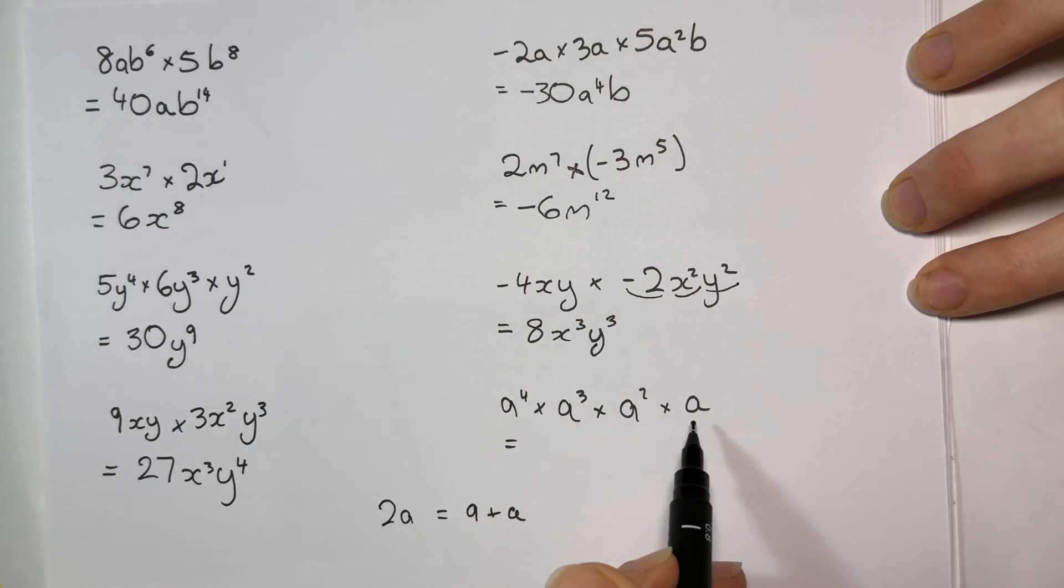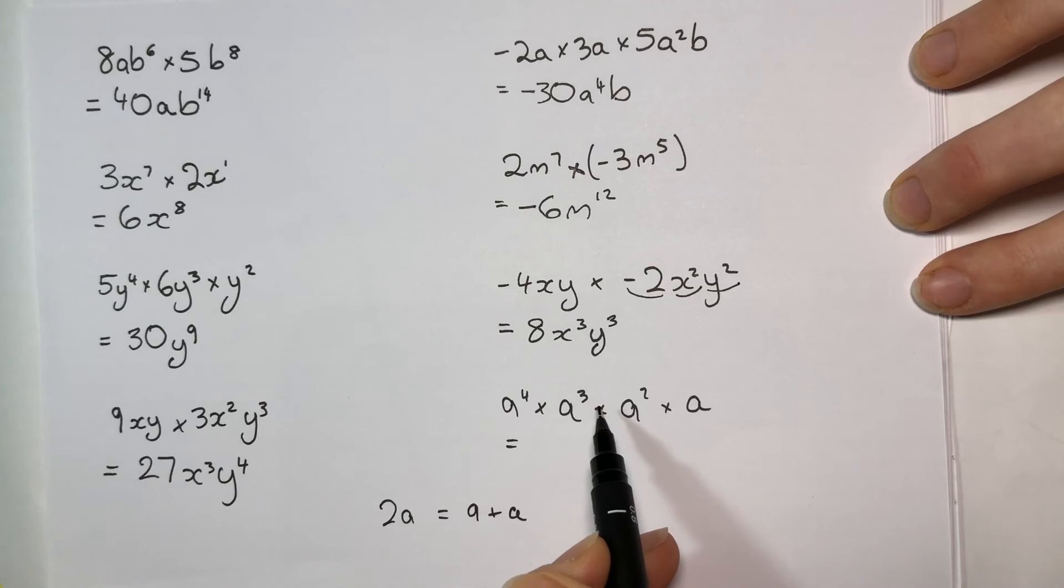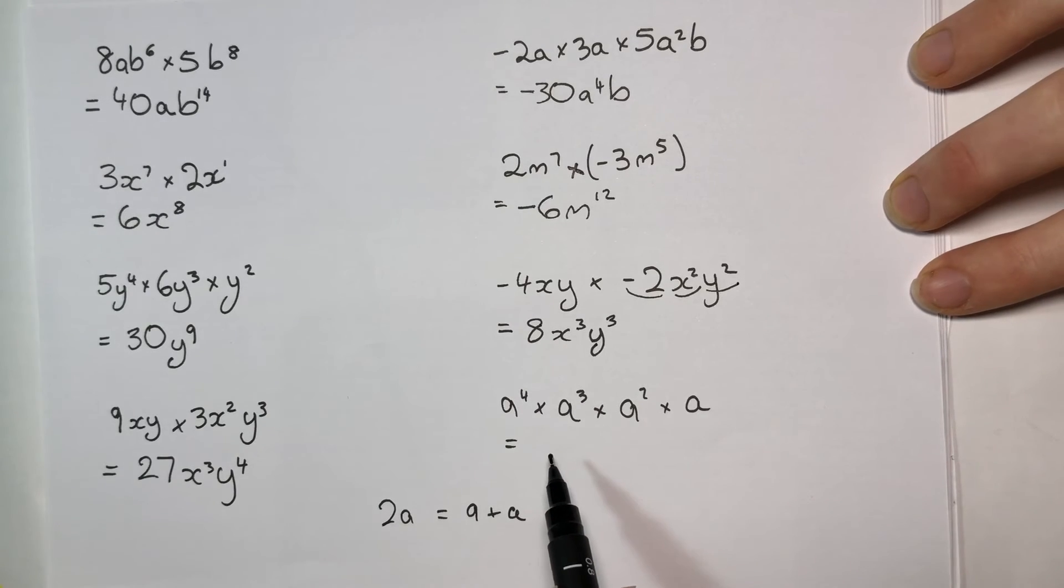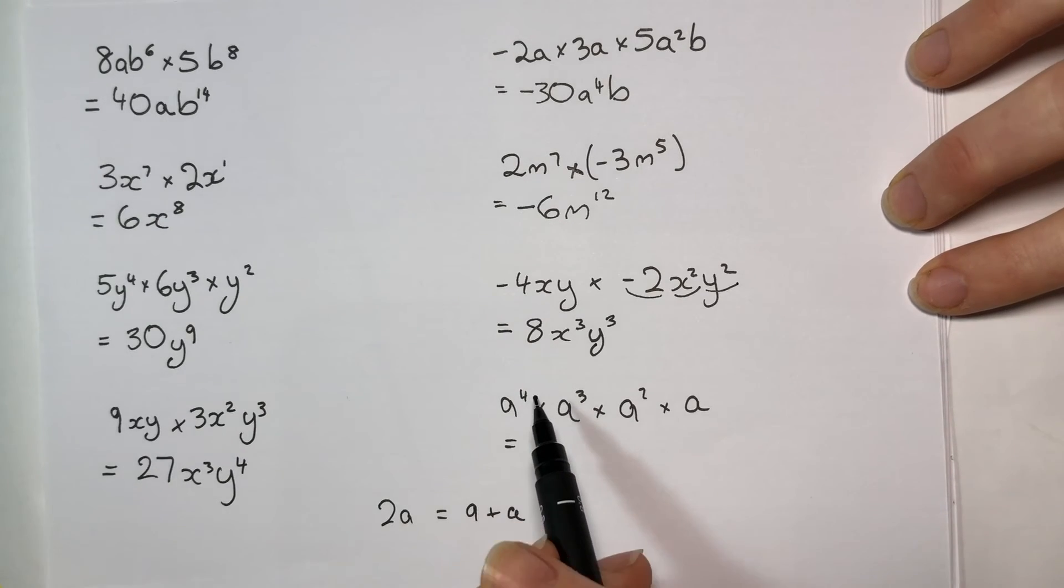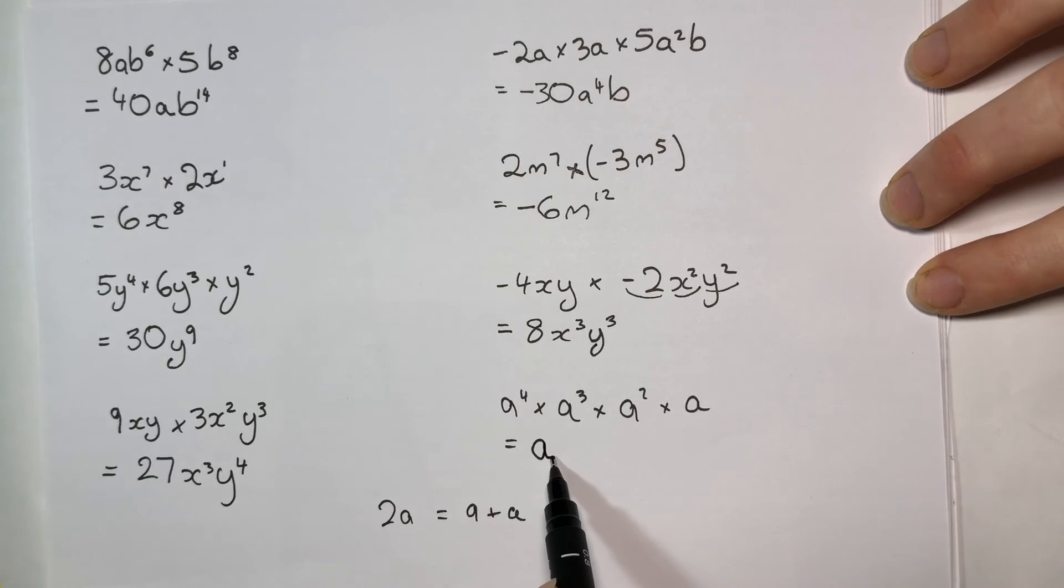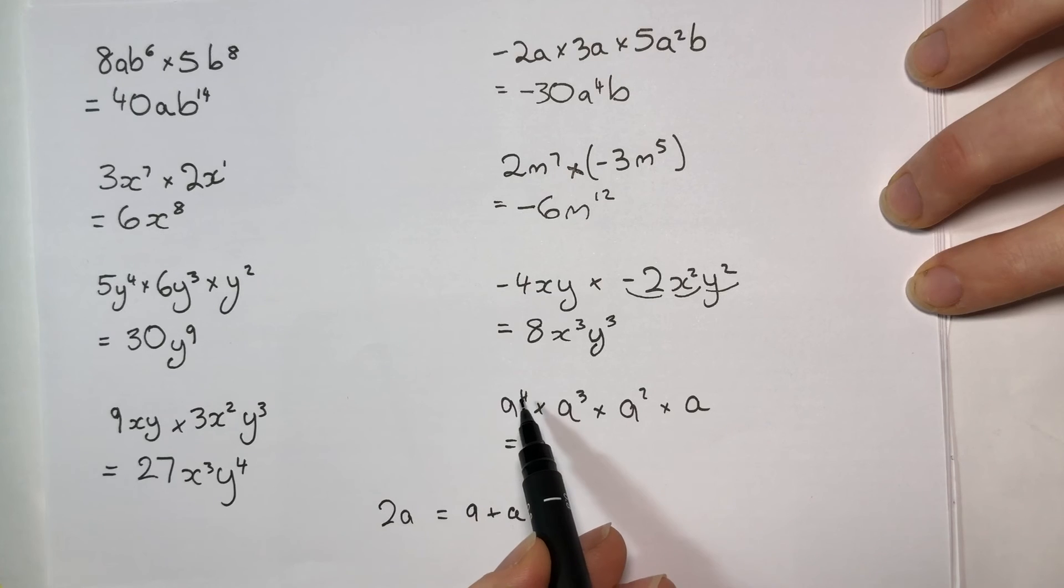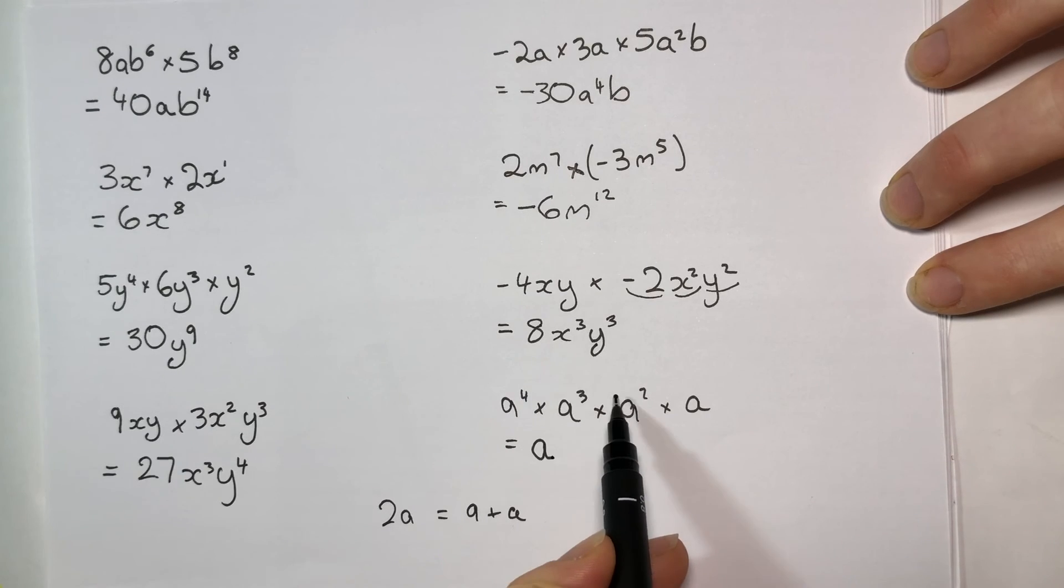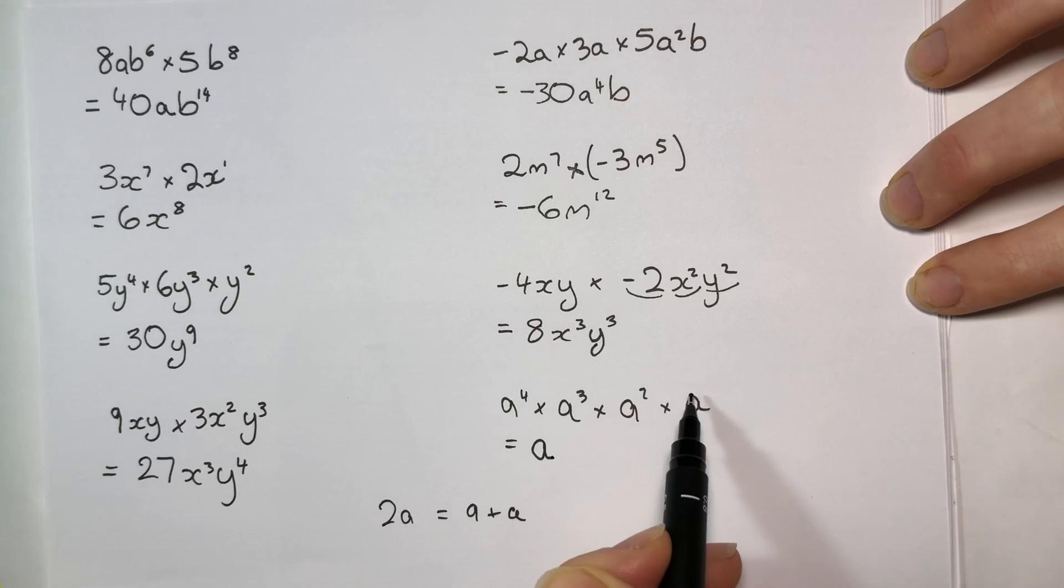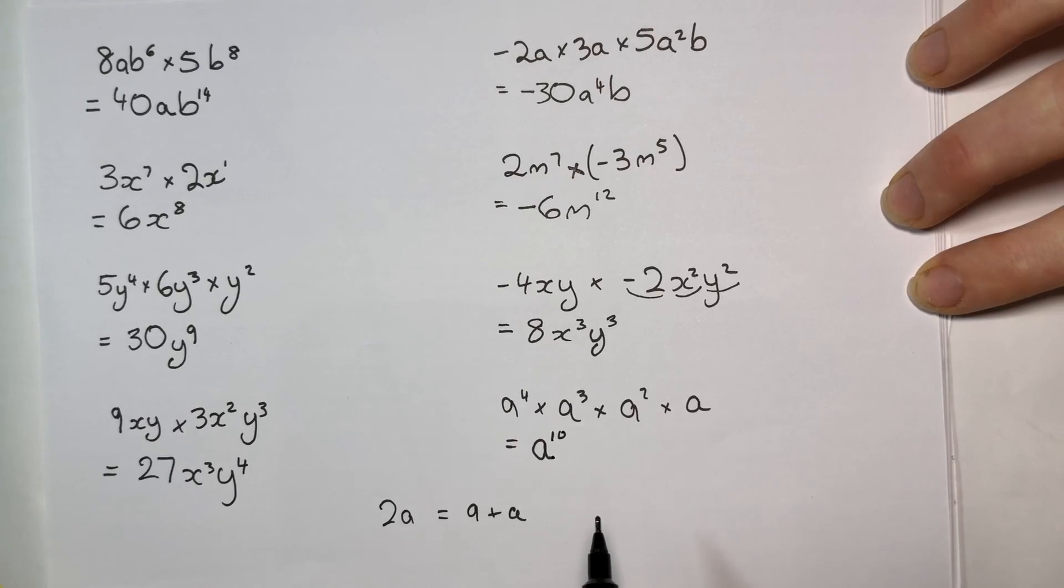Over here, I've just got a's multiplying together, so with no big numbers in front for my bunny rabbits, I'm only going to get one rabbit out. So I've got a rabbit, they're all a's, so I don't have to deal with any other letters. I've got 4 and 3 makes 7, and 2 is 9, and 1 is 10.